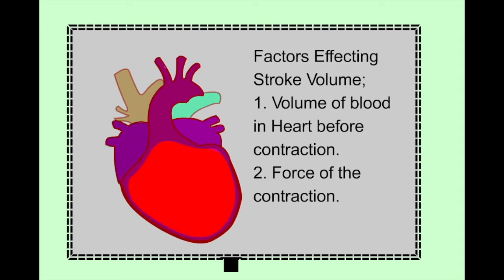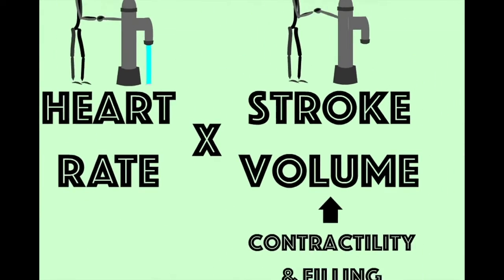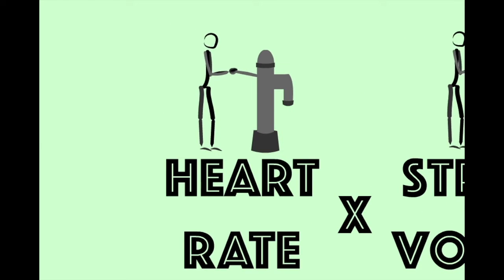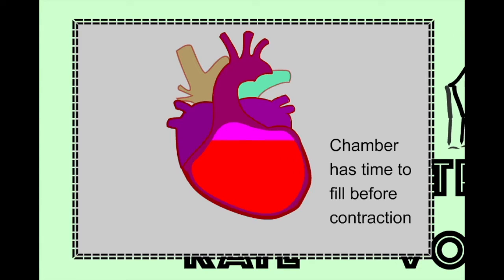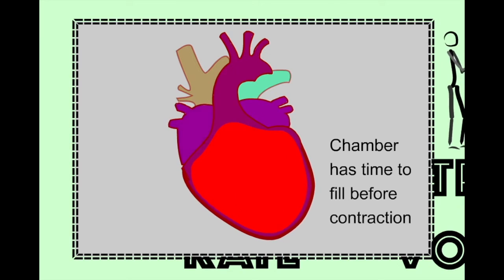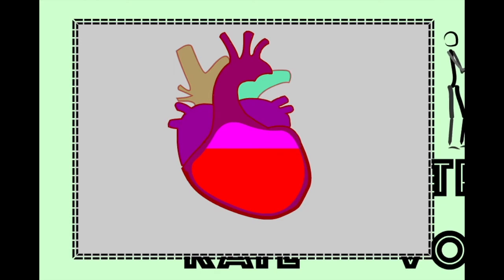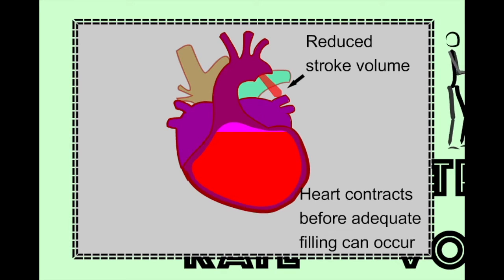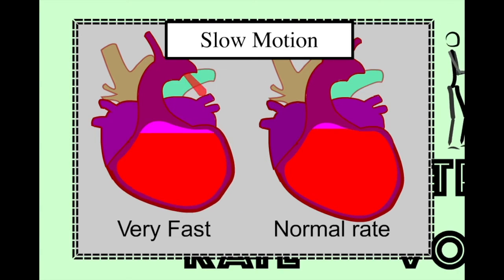So if increasing stroke volume is the first thing we can do to improve cardiac output, what's the second? The rate at which our stick figure works the handle will of course affect the volume of water pumped — the greater the rate, the greater the overall output. The heart is the same, up to a point. The heart must fill with blood prior to contraction to achieve a reasonable stroke volume. If it beats too rapidly, there will not be time for adequate filling to occur, the volume of blood ejected will be lower, and overall cardiac output will therefore be reduced.